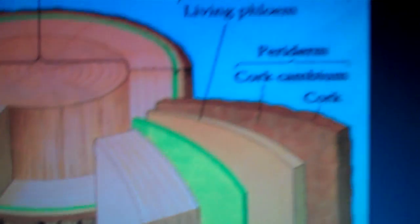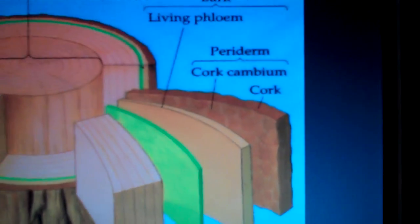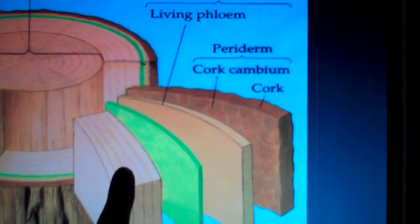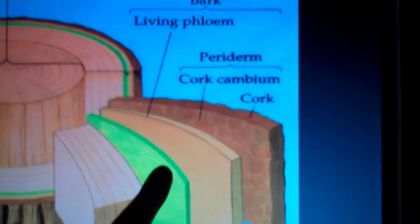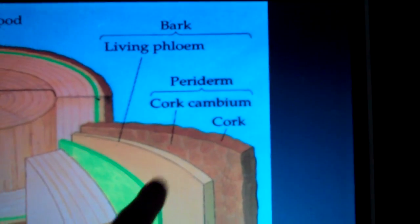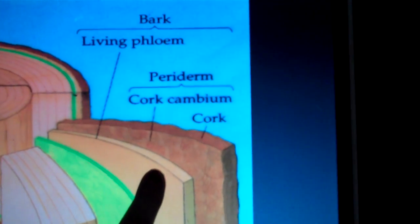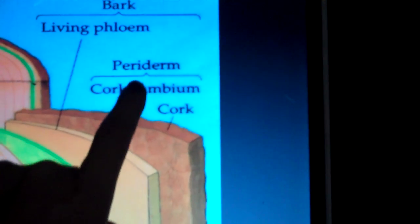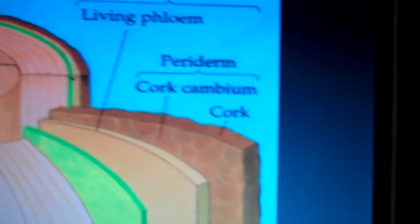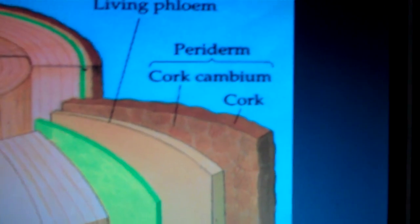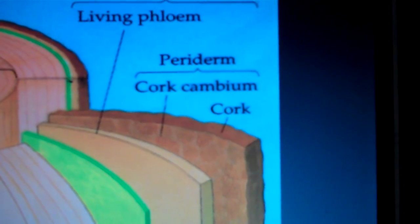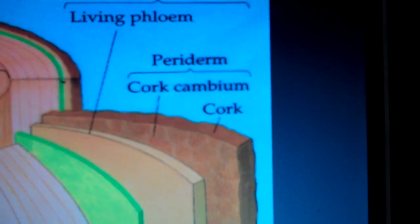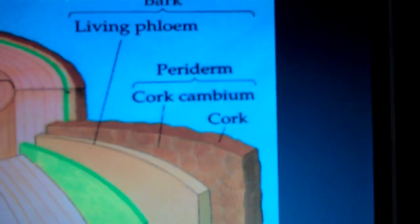Now we are going to focus on the cork cambium. Here we have our sapwood and our secondary xylem, and we have our vascular cambium. We have our living phloem. The bark consists of the phloem and the periderm. As a tree gets older, the epidermis is going to be replaced with periderm, which we know as the outer part of the bark.